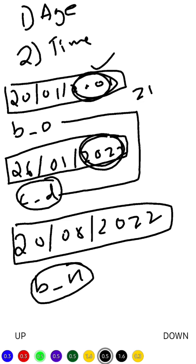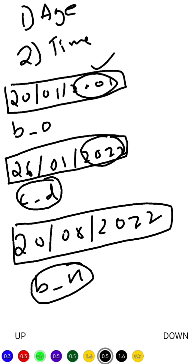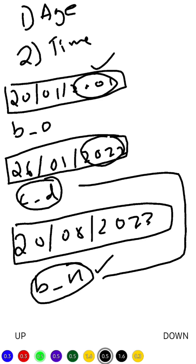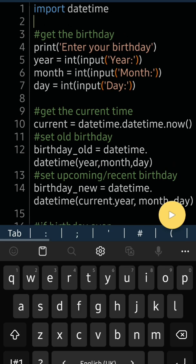Now for the next part — how much time is left for your next birthday when it has already passed? This year's birthday is over, so the next birthday will be in 2023. You update it to 2023, then subtract birthday_new minus current_date to get how many days are left for your next birthday.